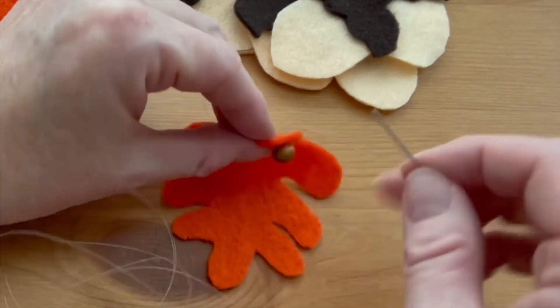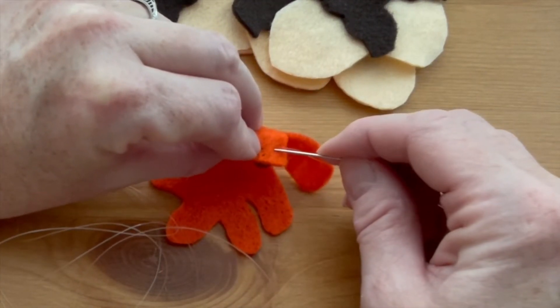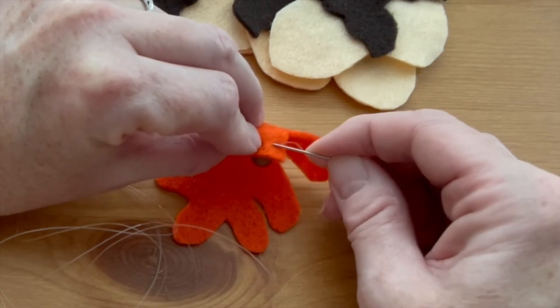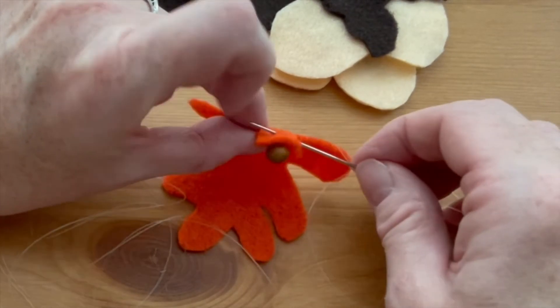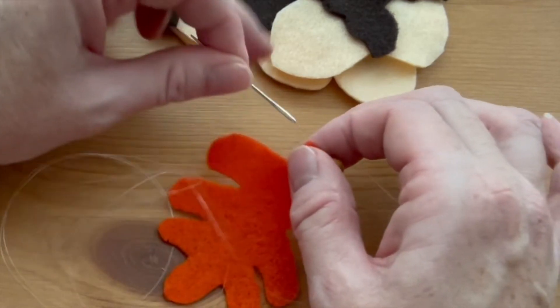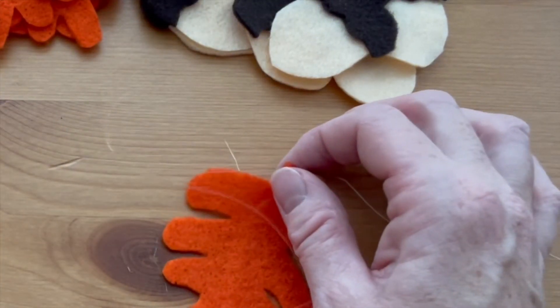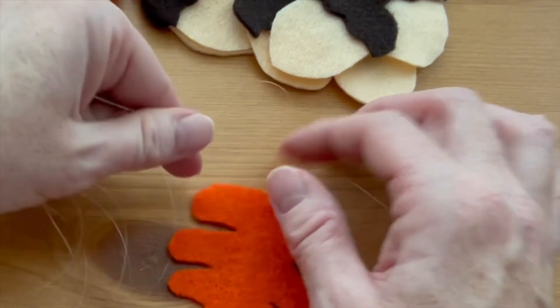Then you want to go to the back of the stem and just make a little stitch there and pull it through. And this will keep your leaf in place where you want it to be and it won't slide around.